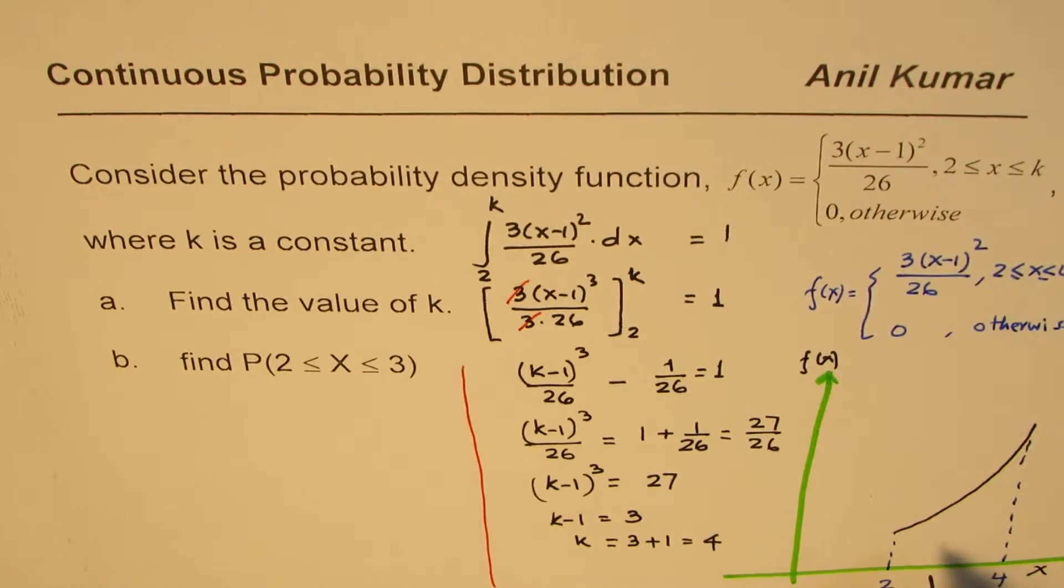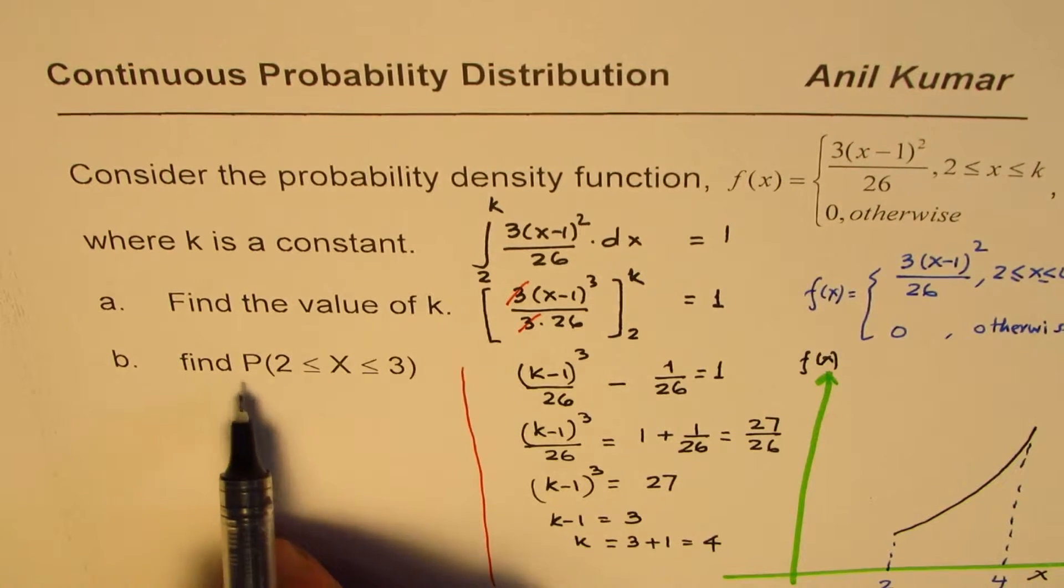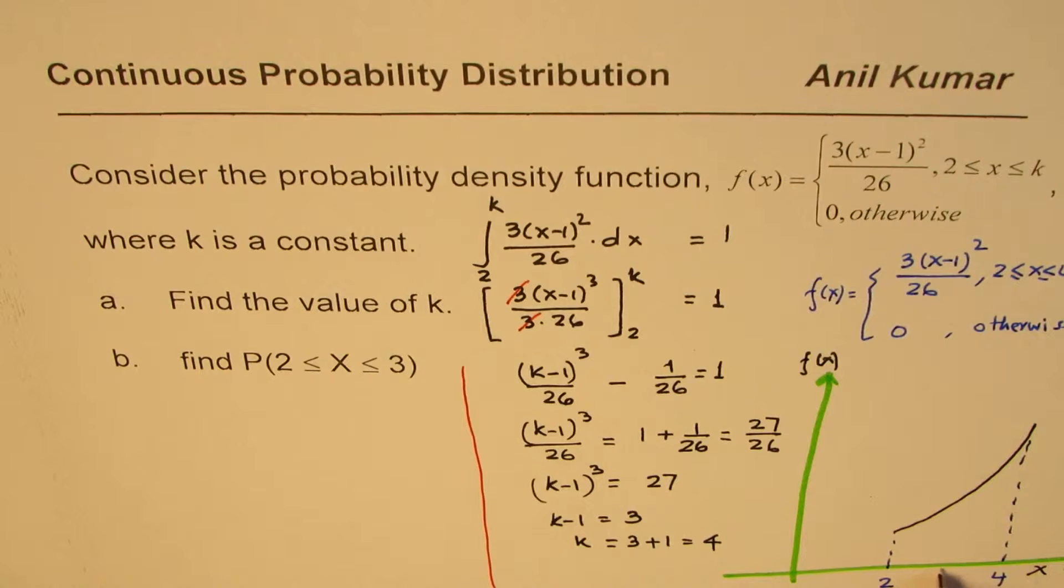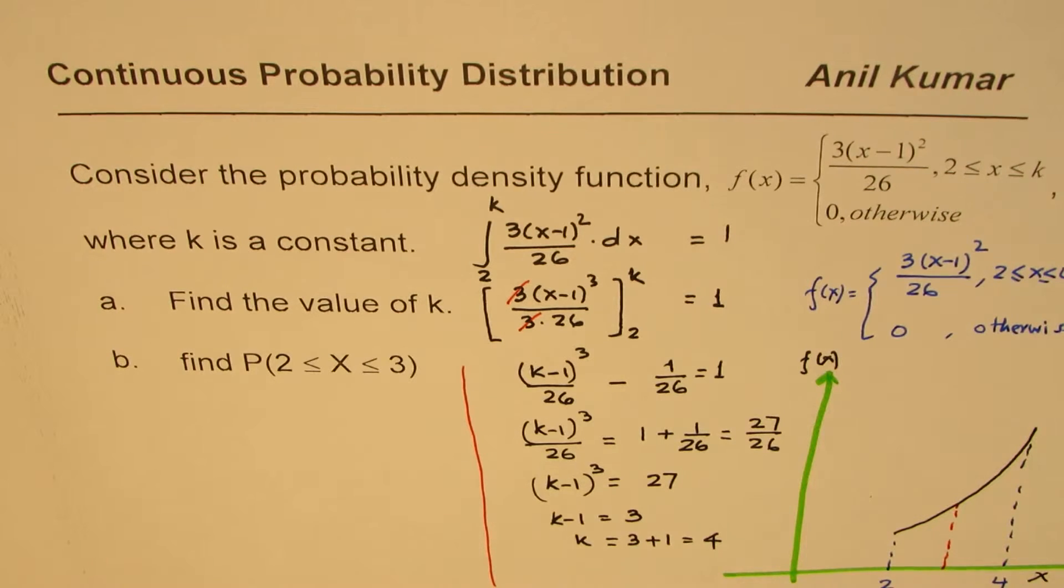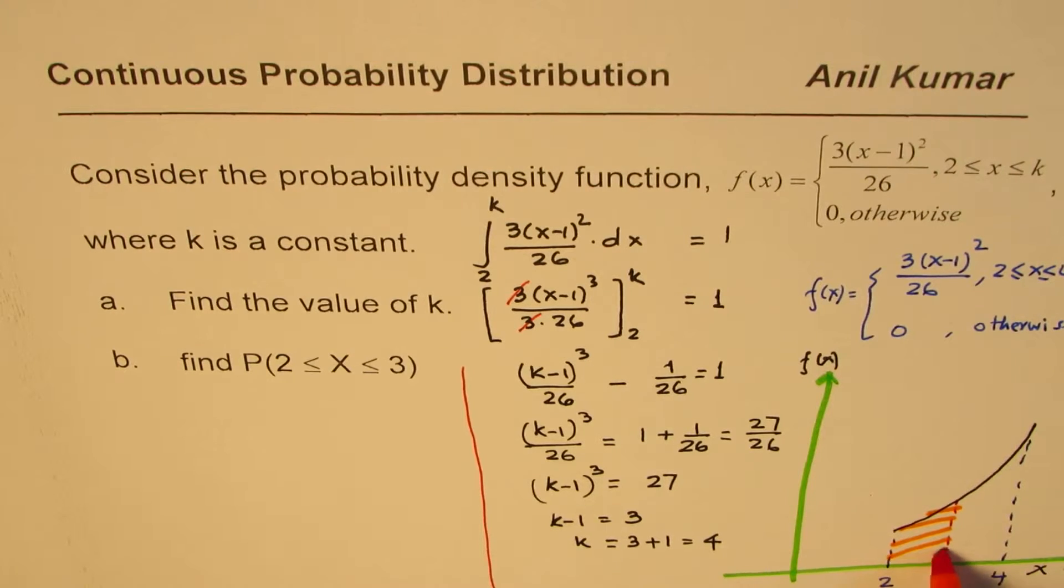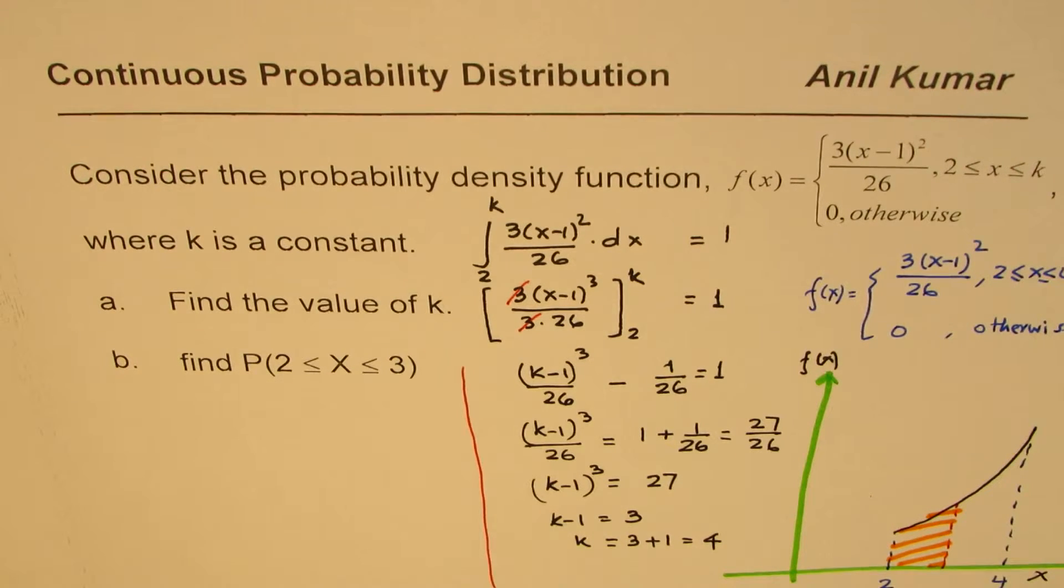Now the question here is, find the probability for x being between 2 and 3, that is to say, the area between 2 and 3. So this area, we need to find the area of this portion, between 2 and 3 will mean this portion. So that is what we are interested in finding.